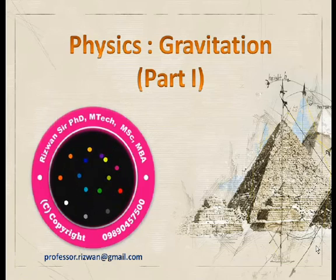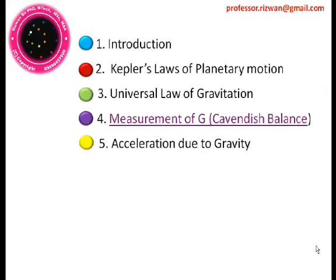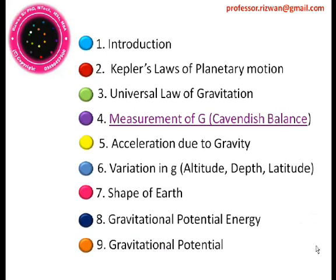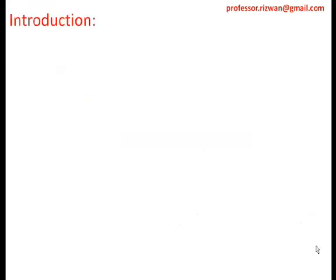Welcome back. In the second session of this gravitation chapter, we will cover points not addressed in the last session. Last session covered the introduction of gravitation, Kepler's laws of planetary motion with animations, and the universal law of gravitation with its formula and the value of G, the gravitational constant. Today we will see the measurement of G, acceleration due to gravity, its variation due to altitude, depth, and latitude, then shape of the earth, gravitational potential energy and gravitational potential.